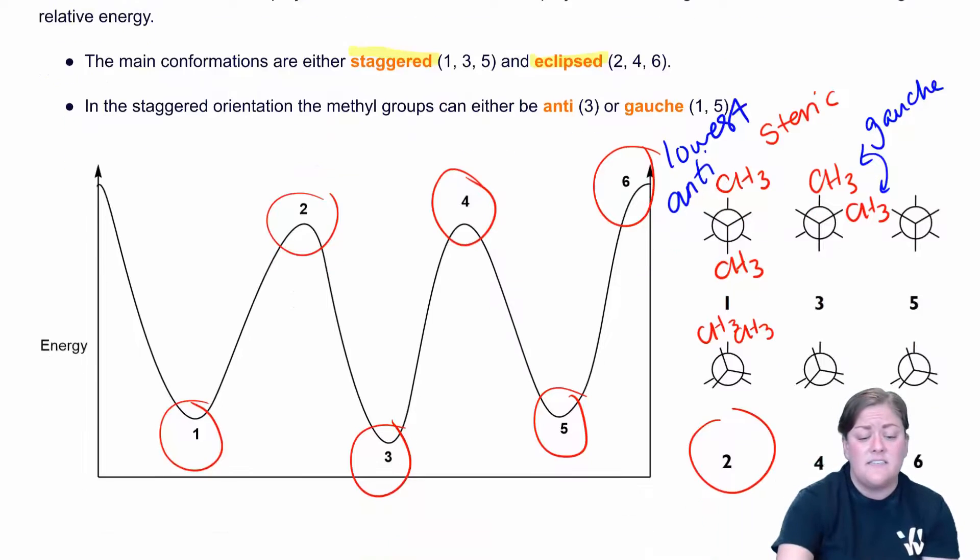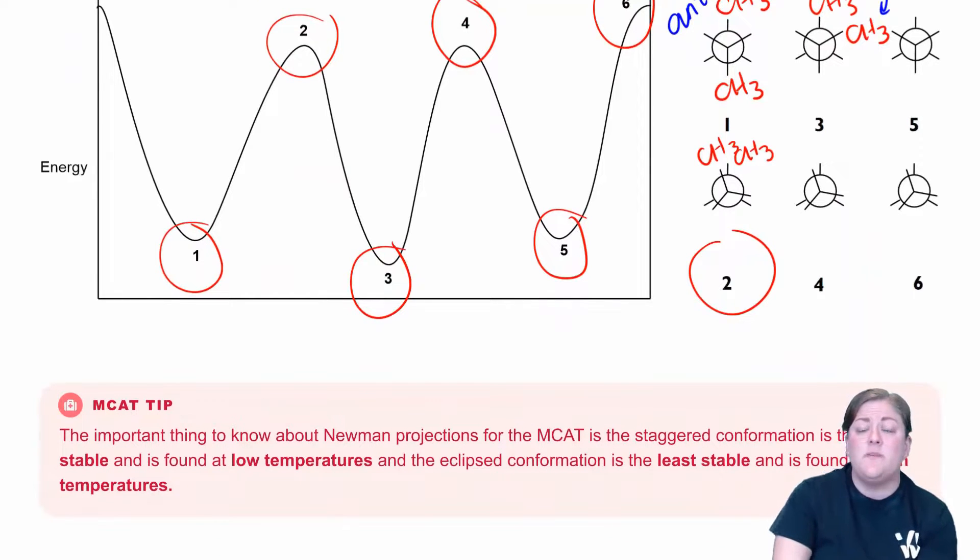Now the important thing to take away is when will these be found? Because carbon-carbon single bonds are freely rotating as long as we're above zero degrees Kelvin. At low temperatures, you're likely to find the most stable conformation. And at high temperatures, you're likely to find the least stable conformation. So conformational isomers can be seen with these bond rotations in these Newman projections. We'll also get to revisit these when we talk about cyclohexane rings, when we talk about the cyclization of sugars.